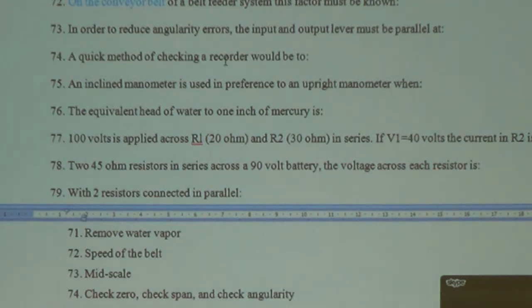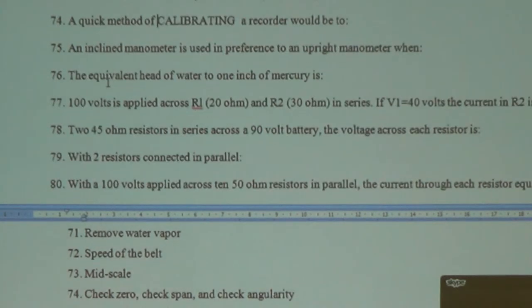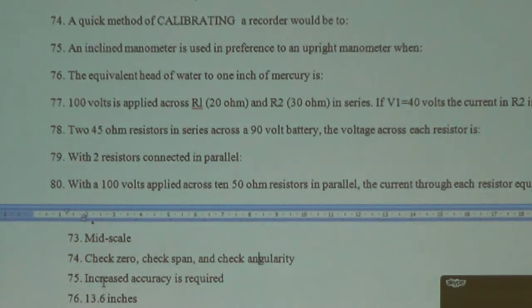A quick method for calibrating - instead of checking, just use this word calibrating. So you do a zero check, a span check, and an angularity check. Inclined manometer is used in preference to an upright manometer whenever you need to have increased accuracy.